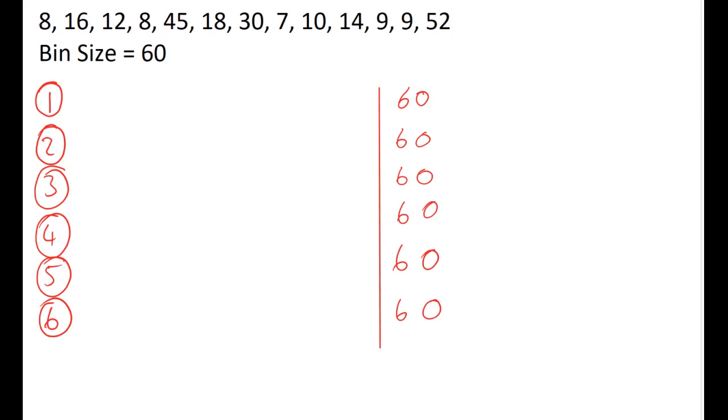So our first number is an 8. I'm going to cross that off and put that in the first bin. What I've written down to the right is the amount of space remaining in the bin, so at the moment we have 52 left in that one.